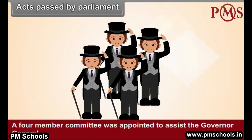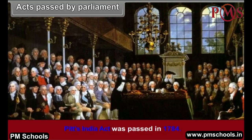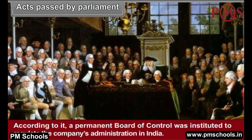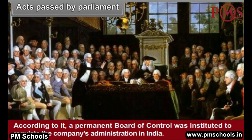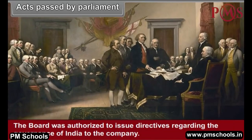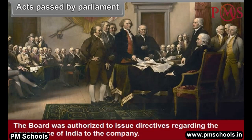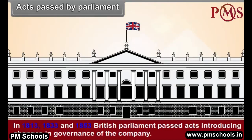Pitt's India Act was passed in 1784. According to it, a permanent Board of Control was instituted to regulate the company's administration in India. The Board was authorized to issue directives regarding the governance of India to the company. In 1813, 1833, and 1853, British Parliament passed further Acts introducing changes in the governance of the company, establishing indirect control over its administration.